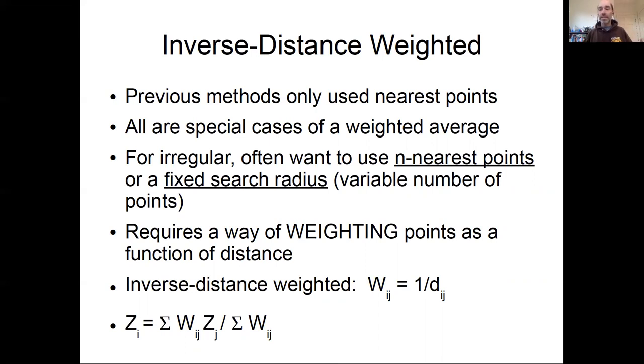The idea of inverse distance weighting is that we are calculating a weighted average between the values, and we're weighting points relative to their distance. All forms of inverse distance weighting are just special cases of weighting averages, depending on how the weights are calculated.